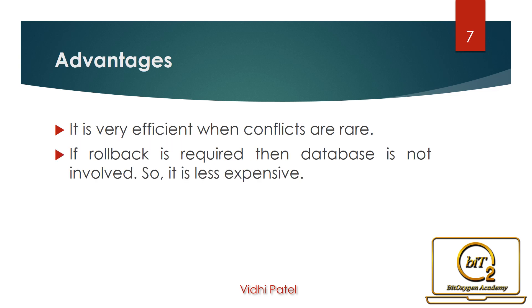Next are the advantages of the optimistic method for concurrency control. This technique is very efficient when conflicts are rare. The occasional conflicts result in transaction rollback. The rollback involves only the local copy of the data, not the database. Thus, there will not be any cascading rollbacks.